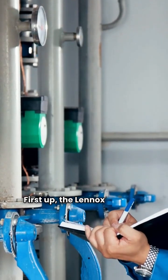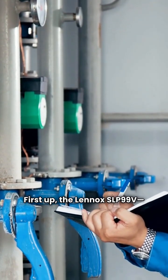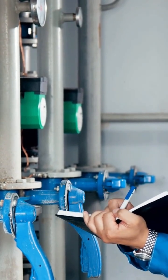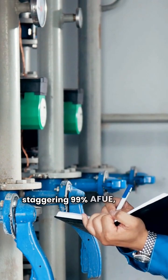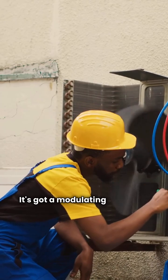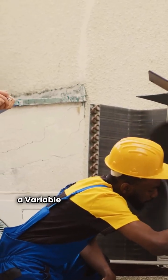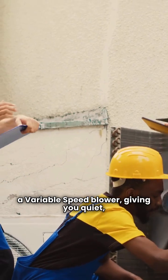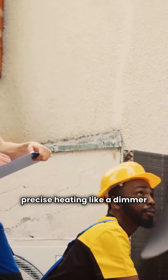First up, the Lennox SLP99V. This beauty boasts a staggering 99% AFUE, turning almost all gas into heat. It's got a modulating gas valve and a variable speed blower, giving you quiet, precise heating like a dimmer switch.